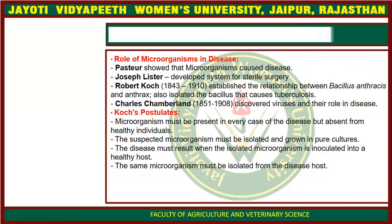According to Koch, if anthrax is caused by microbes, then we can isolate the causative microorganism from the individual suffering from anthrax. And the disease must result when the isolated microorganism is inoculated into a healthy host. So one unhealthy person can infect healthy people through these infections.